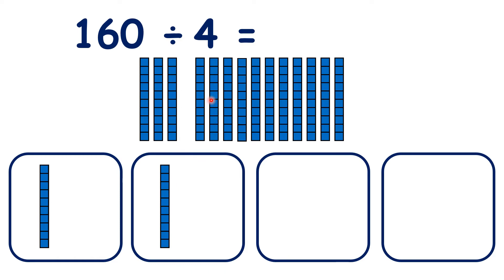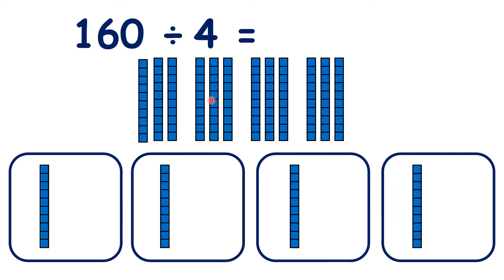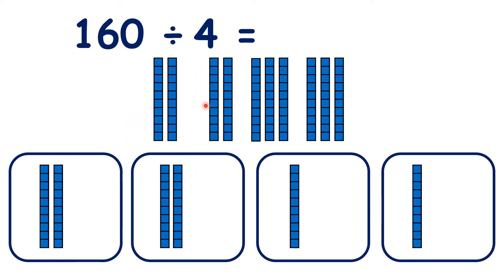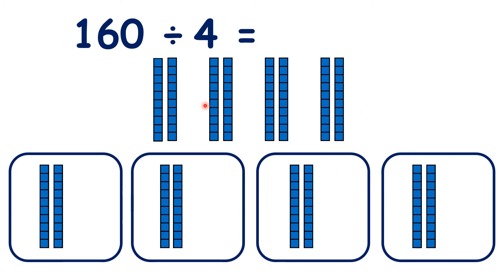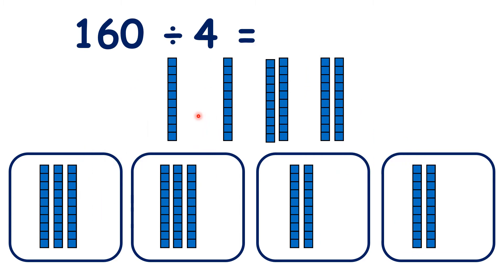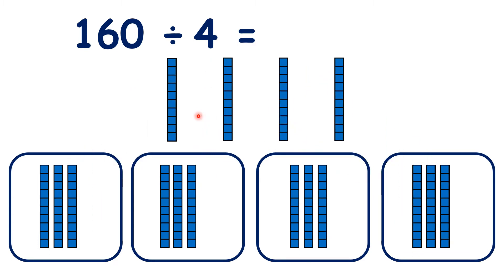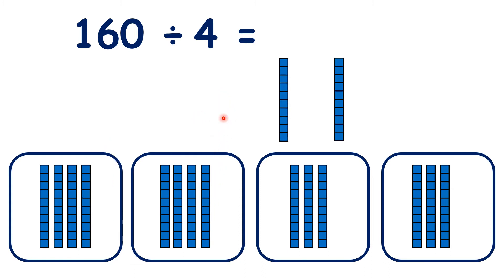And we can see that when we share out those 16 tens, when we share out 160, we have 4 tens in each group. So 160 divided by 4 is 40.